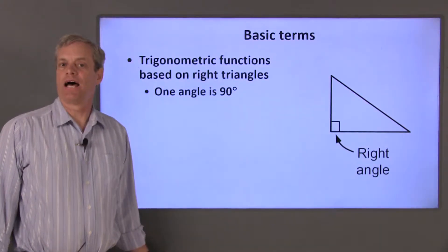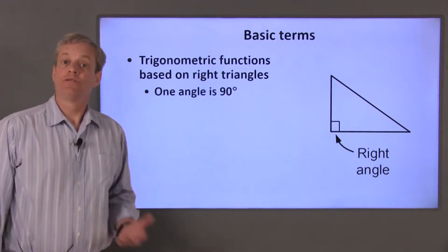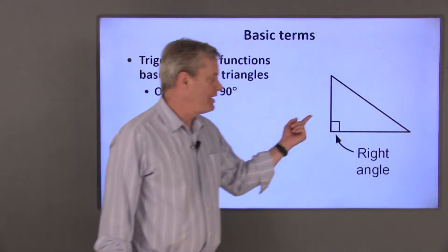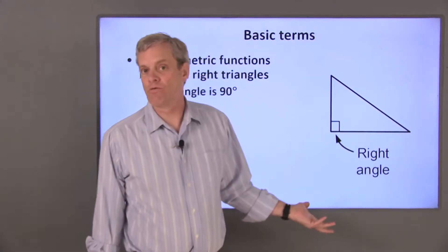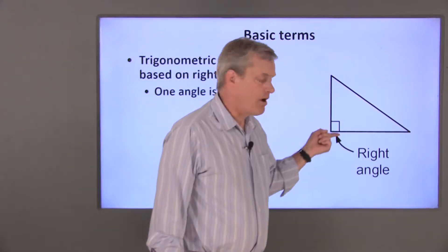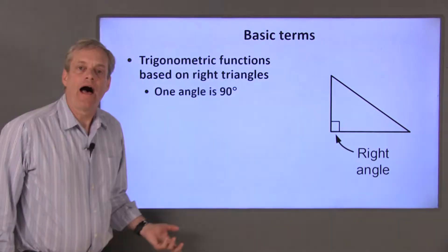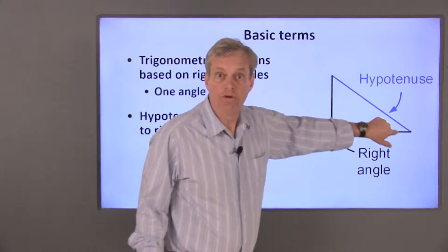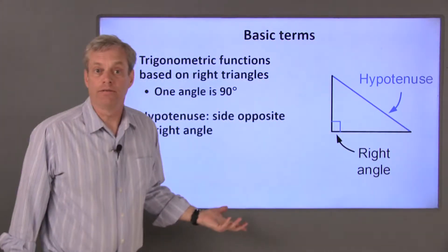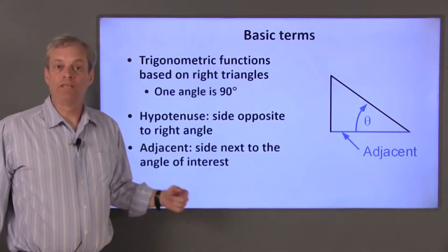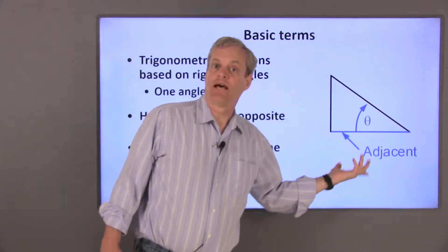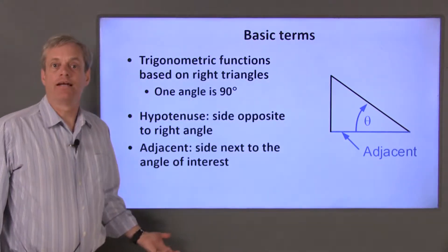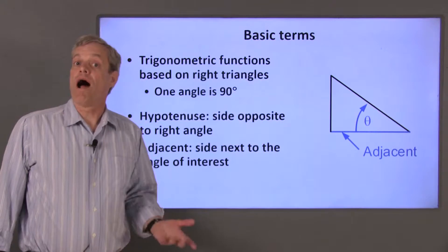Trigonometric functions relate the lengths of the sides of a right triangle. A right triangle has one interior angle which is 90 degrees, or a right angle. Right angles are often denoted by this little square. The hypotenuse of a right triangle is the side of the triangle that's opposite to the right angle — this will always be the longest side. Trig functions are defined in terms of the other two angles and the lengths of the sides of the triangle. In order to keep track of which side we're talking about, we define the sides relative to whether they are adjacent to or opposite to the angle.